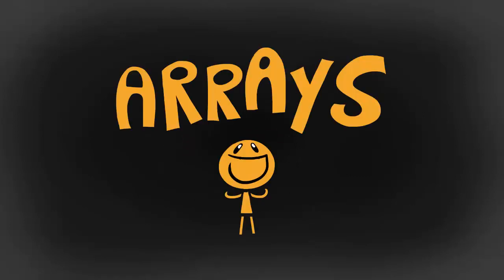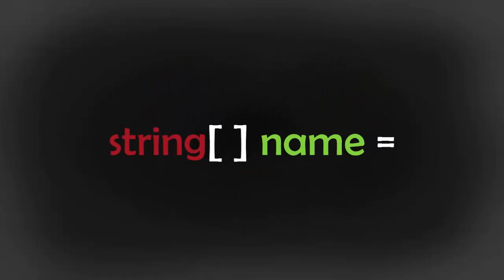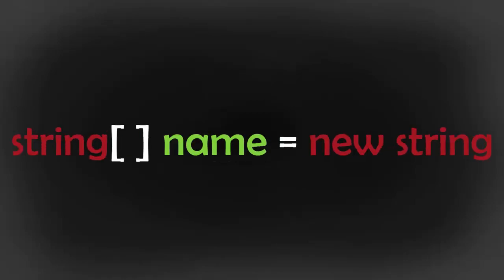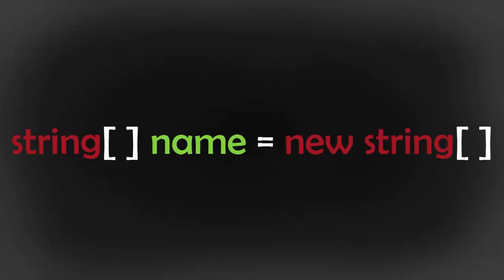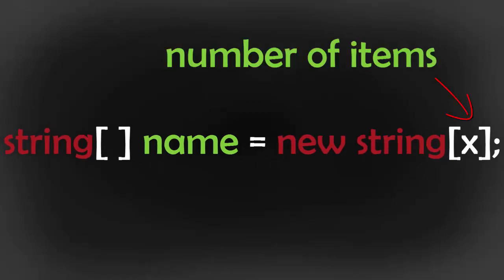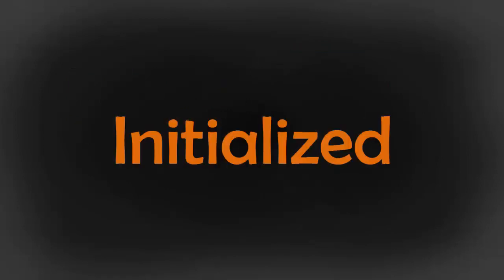Then we follow with the name of your array and then an equal sign. After that we write the keyword new, then again the type of the array and the square brackets, and this time inside the square brackets you put the number of items you want in your list — in other words, how many pieces of information you want your array to store. And just like that we initialize our array.